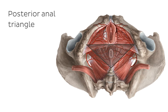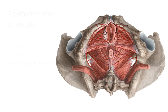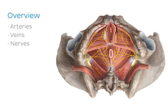Moving now to the posterior anal triangle, we can see that it contains the anus, which is the opening of the rectum, the external anal sphincter, which is a sphincter of muscle surrounding the anus, and the ischioanal fossa, which is this horseshoe region just here. Throughout this tutorial we're going to be talking about the arteries, the veins, and the nerves of the female perineum.